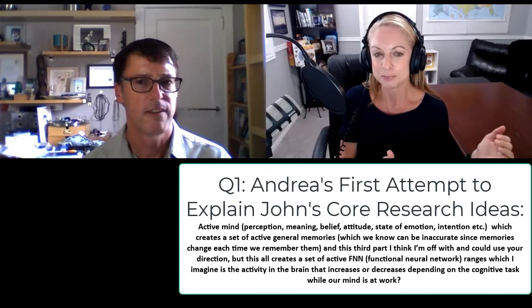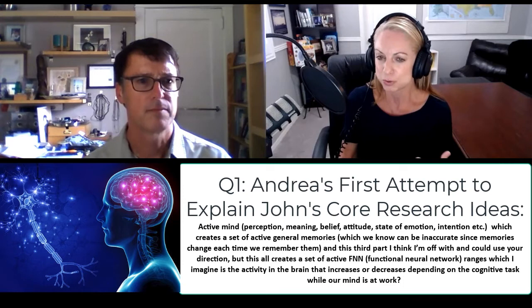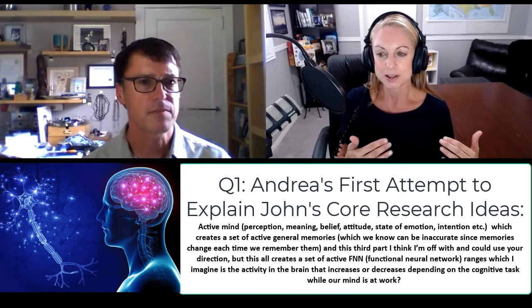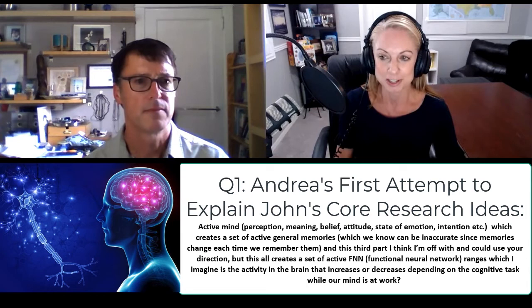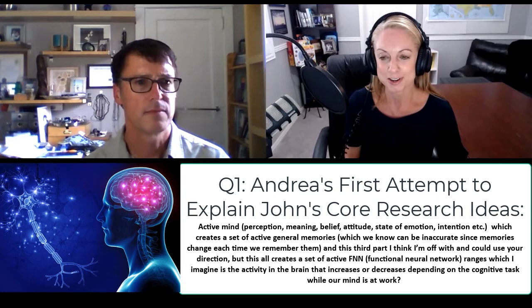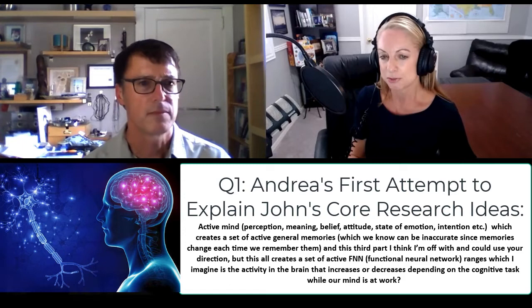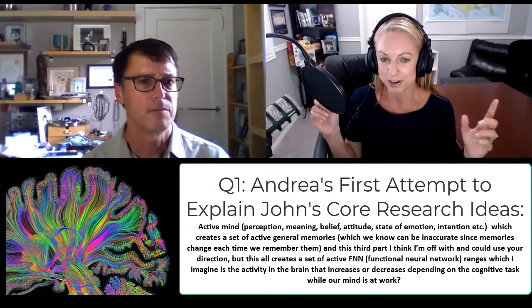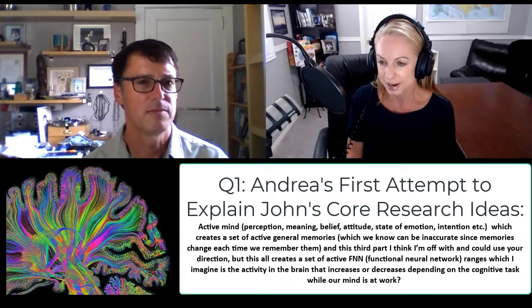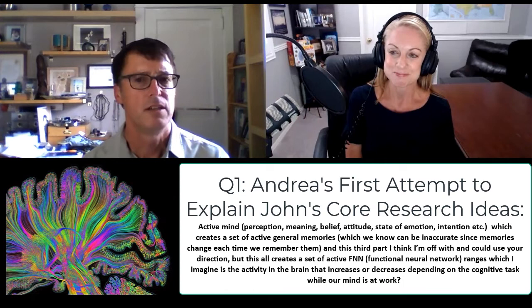I'm not sure if I have your core idea right, but I'm not afraid of being wrong. Do I have this right: that your core idea is that we have an active mind — so that we create perceptions, meanings, beliefs, attitudes, emotions, intentions in our mind — which creates a set of memories? And we can go off on tangents with memories because each time we recall a memory, we recall it a different way. And the third part is where I think I'm off — but this all creates a set of functional neural networks, with different activity increasing or decreasing depending on what task we're working on. Do I have your core idea right?